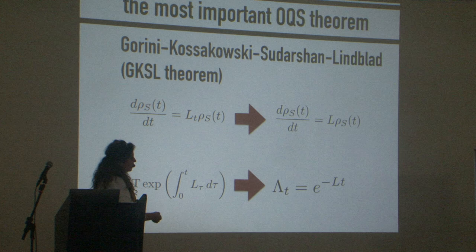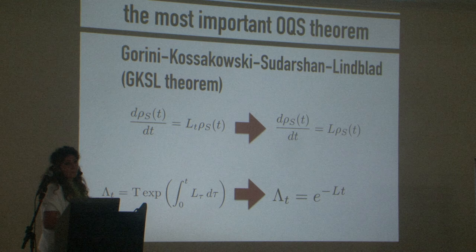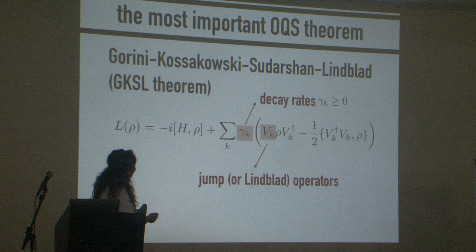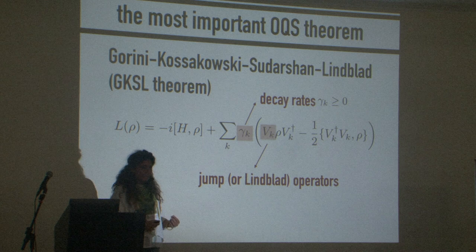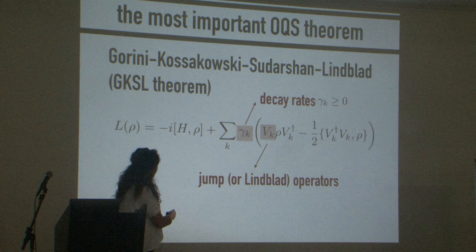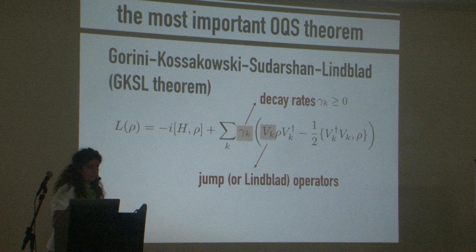When the generator or the right-hand side of the master equation is not explicitly time-dependent, then we have a semi-group for the dynamical map, so the dynamical map satisfies the semi-group property. In this case we have the well-known Gorini-Kostakovsky-Sudarshan theorem. This is the form of the Gorini-Kostakovsky-Sudarshan-Lindblad master equation. When I say it is not explicitly time-dependent, none of these operators or the decay rate have explicit time-dependence — the super-operator is not time-dependent.